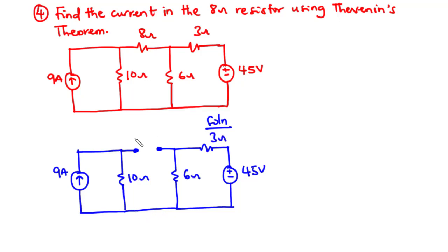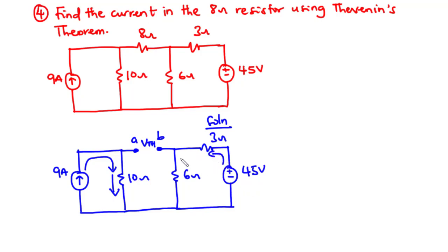For this particular circuit, we have a voltage source and also a current source. Now let's find the value of Vth. Considering this loop, this 9 amperes current circulates in the clockwise direction so that we have 9 amperes flowing through the 10 ohms resistor in this direction. Considering this other loop, the current produced by this voltage source flows through the 3 ohms resistor, through the 6 ohms resistor, and then returns to the negative terminal of the voltage source. Since we have an open circuit here, no current is going to flow in this direction. Let the current produced by this voltage source be I.